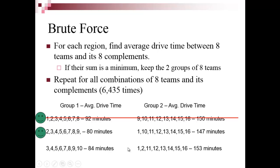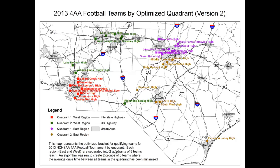After running all 6,435 combinations, the results showed a cluster of eight teams around Charlotte. However, with 10 Charlotte-area teams qualifying, two had to be excluded. The Raleigh-Durham group and southern Raleigh, plus Pinecrest and Wilmington, formed the other quadrant. But the results revealed an outlier problem: Richmond Senior had to travel all the way to the other side of Charlotte, because the drive times in the Charlotte cluster were so small that any group including them minimized the total sum regardless.